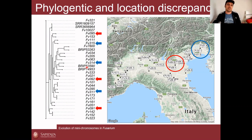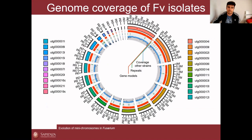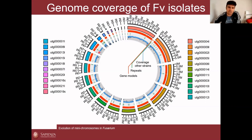This phylogenetic tree was built using RAxML and looks only at SNPs, not at presence or absence of chromosomes. Looking at the genome coverage of all 24 strains against the Italian strain assembly, regions that are darker blue have lower coverage. The mini-chromosome regions show very low coverage — meaning most strains do not carry them. These low-coverage regions correspond to the two extra chromosomes I described.